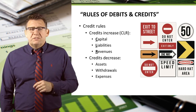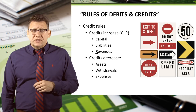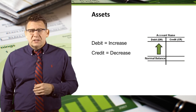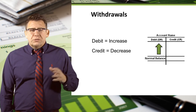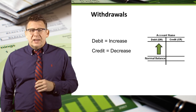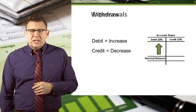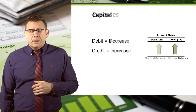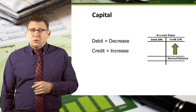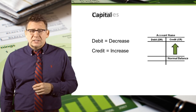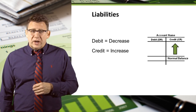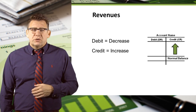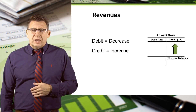Let's conclude this video with a visual recap of the rules of debits and credits. Assets increase with debits and have normal debit balances. Withdrawals increase with debits and have normal debit balances. Expenses increase with debits and have normal debit balances. Capital increases with credits and has a normal credit balance. Liabilities increase with credits and have normal credit balances. Revenues increase with credits and have normal credit balances.